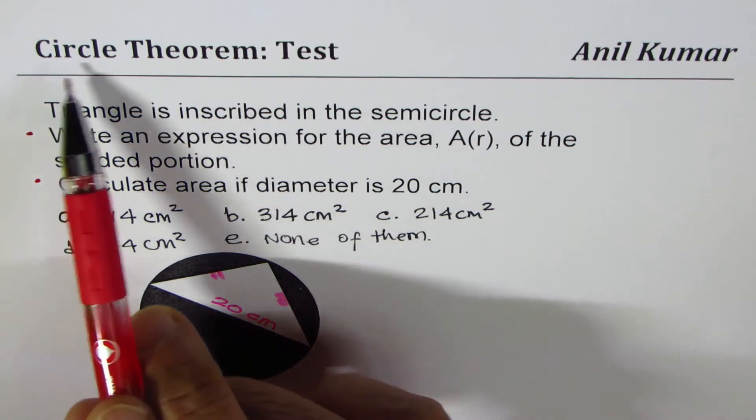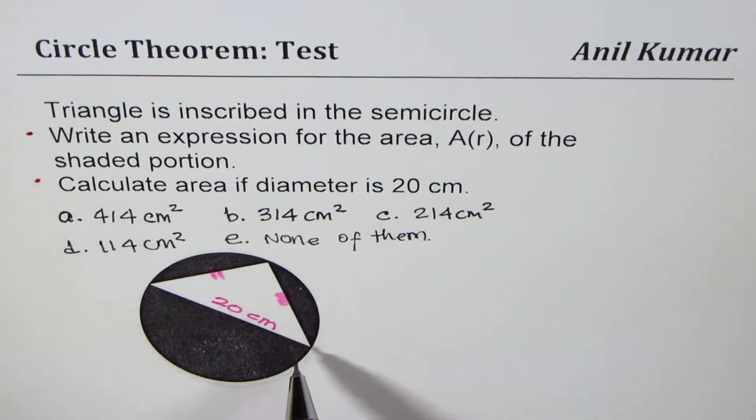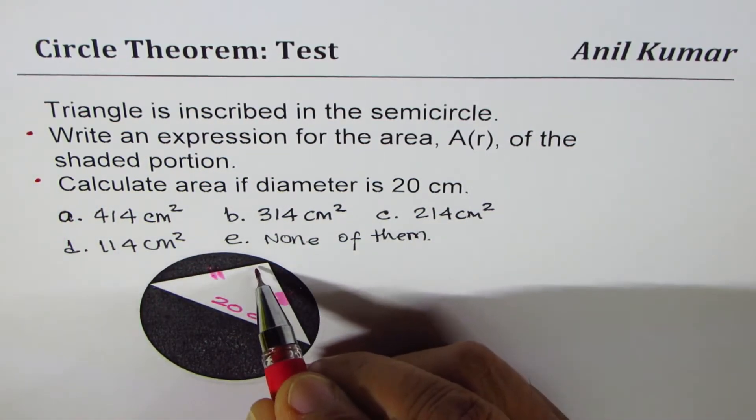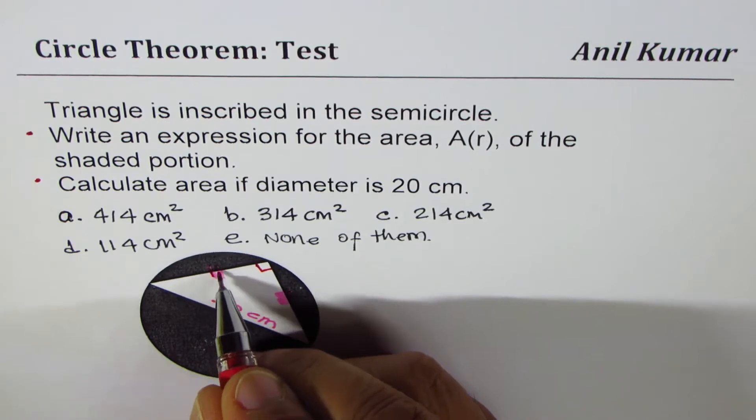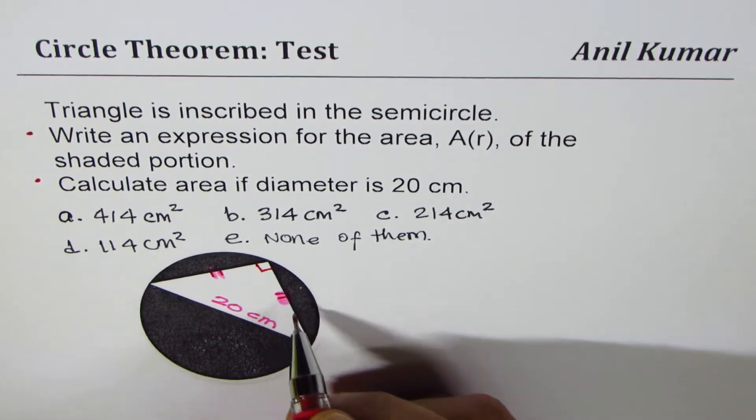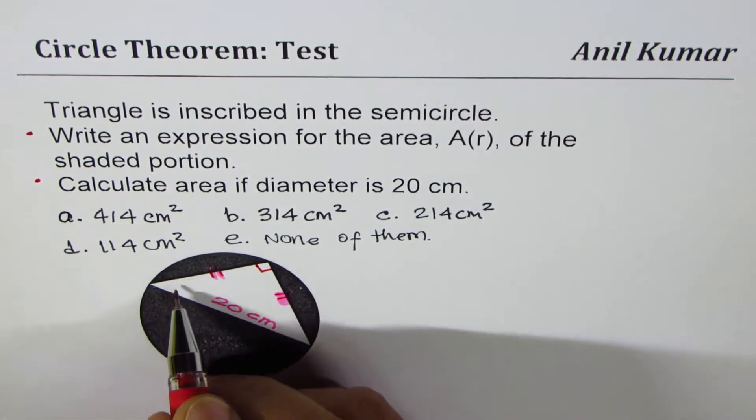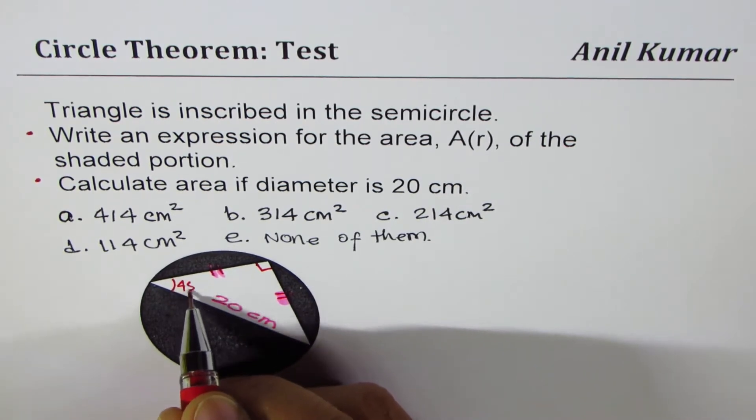Now, getting back to circle theorem, if I have a triangle in a semicircle, then it is always going to be a right triangle. Remember that. Second, we are given actually these two sides as equal sides. It's an isosceles triangle. So these angles are 45 degrees.